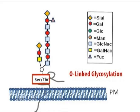The serine or threonine is usually linked directly to N-acetyl-galactosamine, to which other sugars can then be added. In some cases, these sugars are further modified by the addition of sulphate groups.